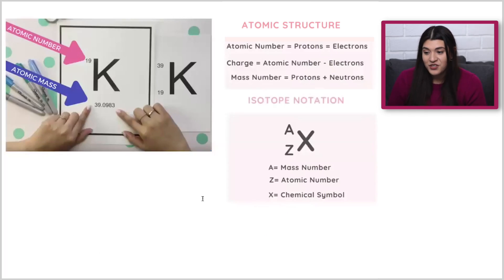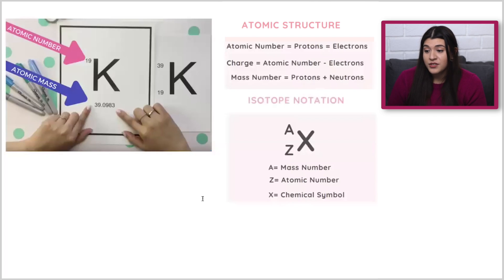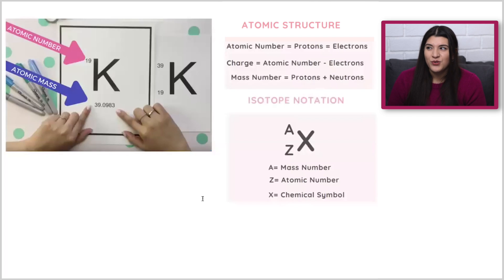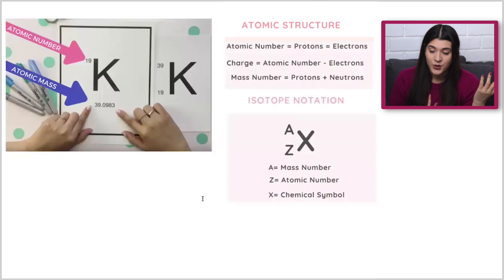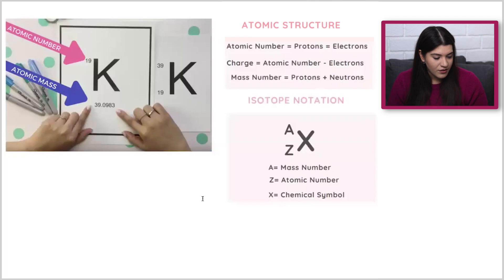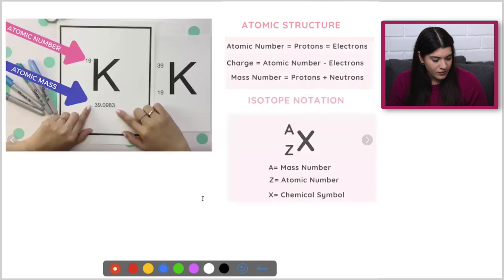So atomic structure — just understanding what's in an atom, knowing how many protons, neutrons, and electrons there are, and being able to read it on the periodic table versus if they give you something known as an isotope notation. Let's just start off with that.